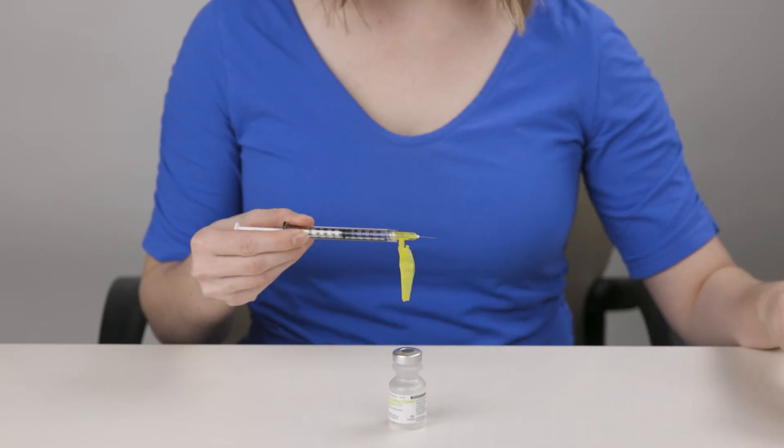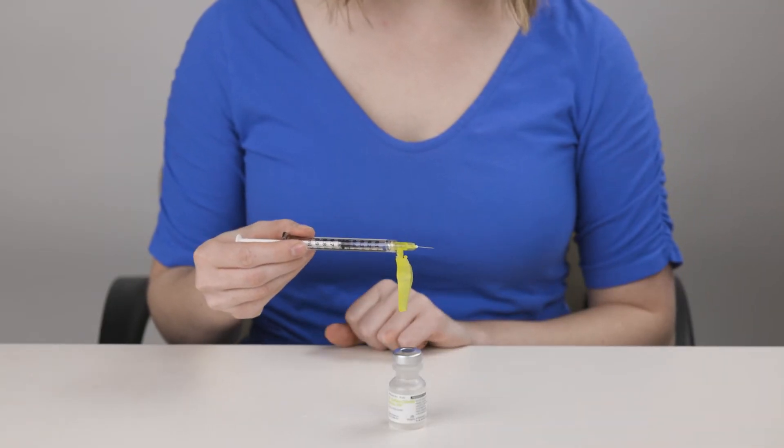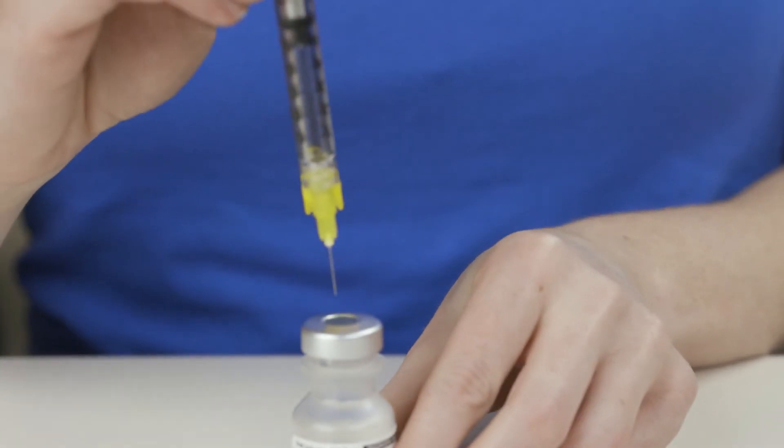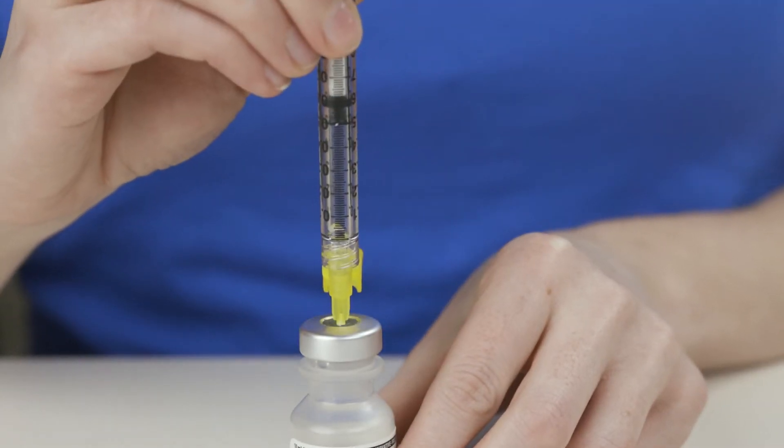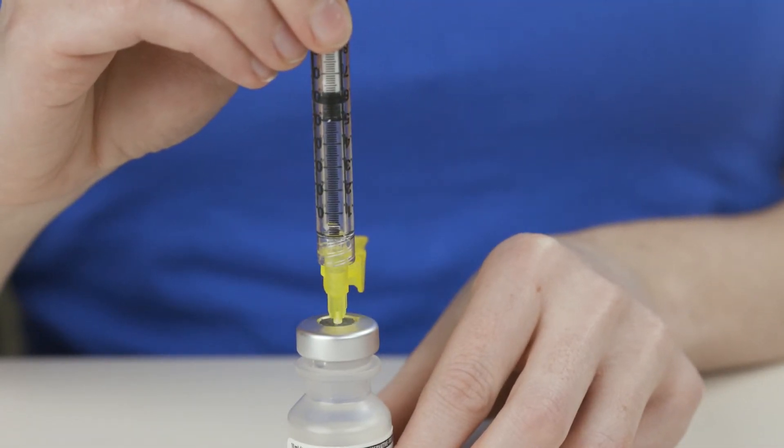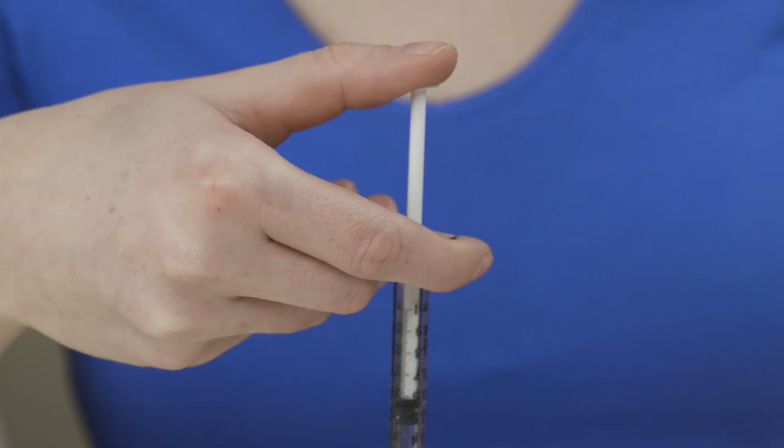Remove the needle cover from the syringe. With the vial upright, put the needle straight into the rubber stopper of the medication vial. Inject air into the vial.